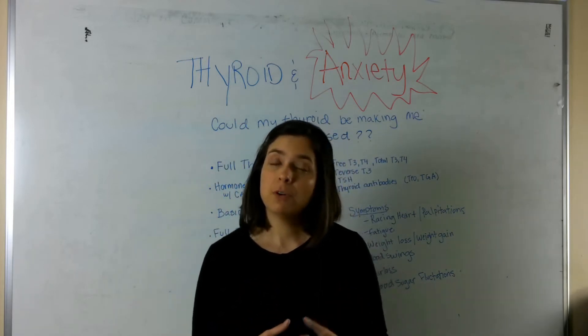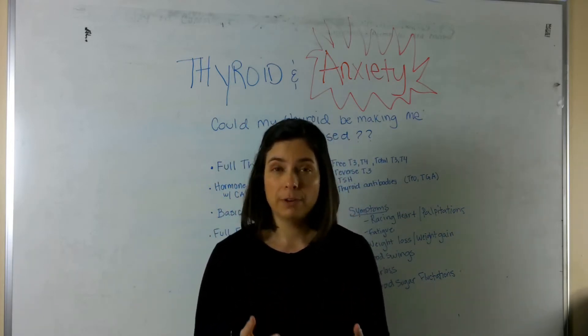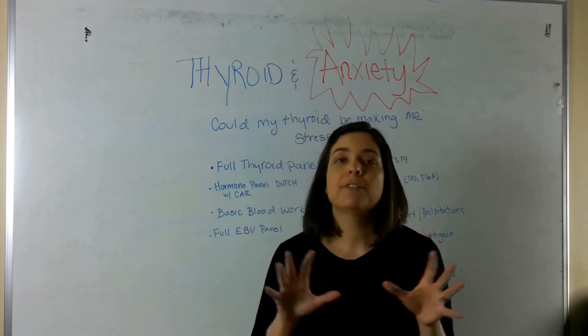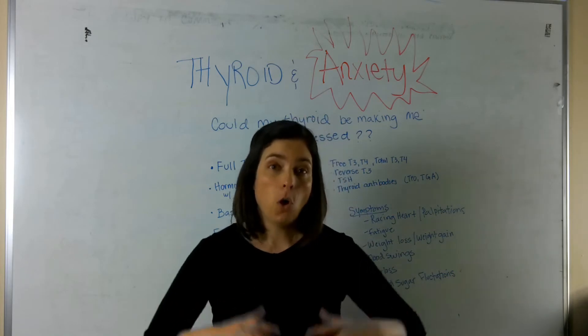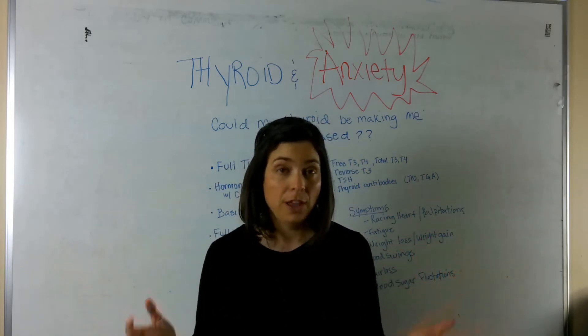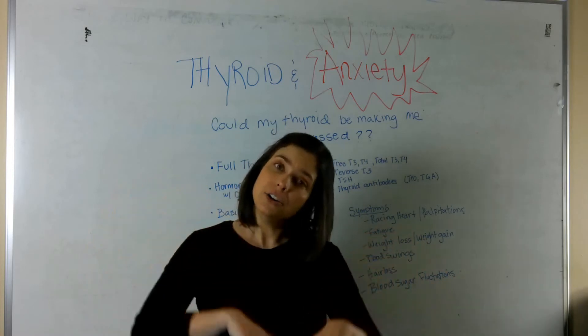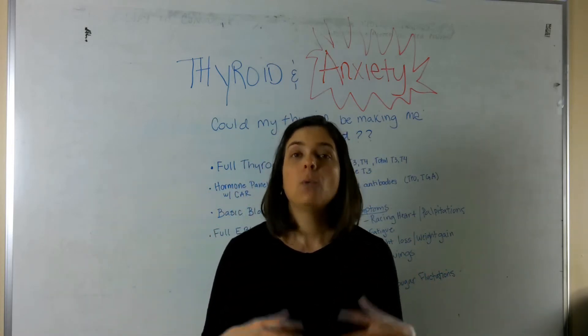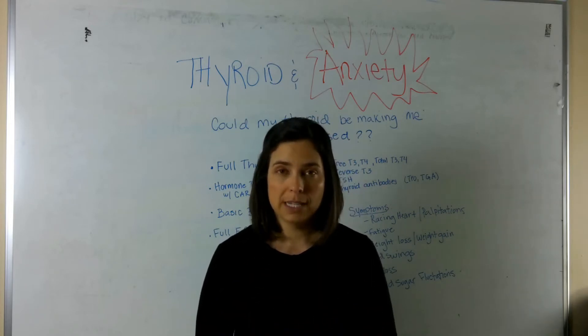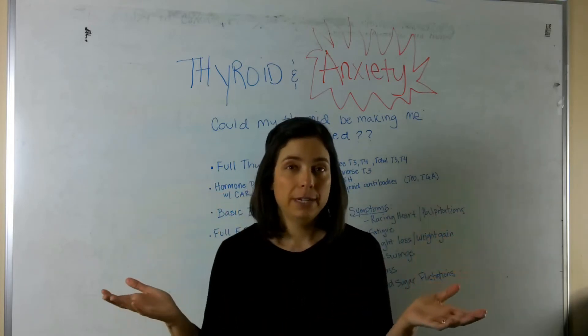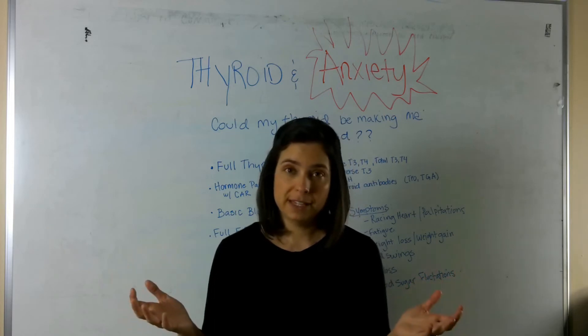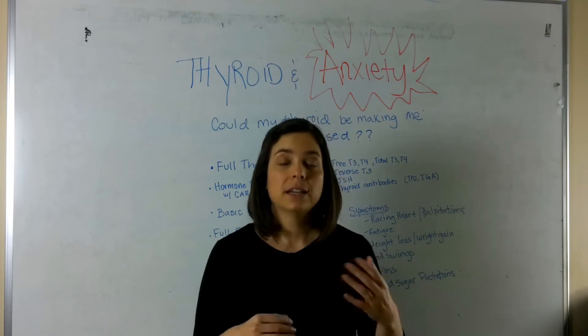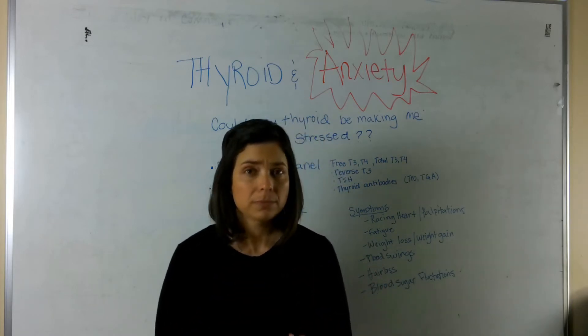But today we're going to focus in on anxiety related to thyroid dysfunction. So as you know, there's two types of thyroid dysfunction. There's overactive thyroid, called hyperthyroidism, and there's underactive thyroid, called hypothyroidism. Now when these are connected to an actual autoimmune process, hyperthyroidism is called Graves' disease. And hypothyroidism is called Hashimoto's.